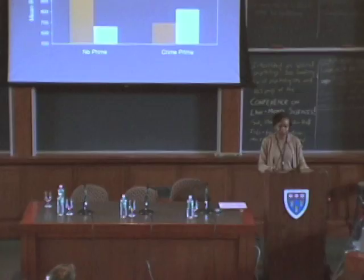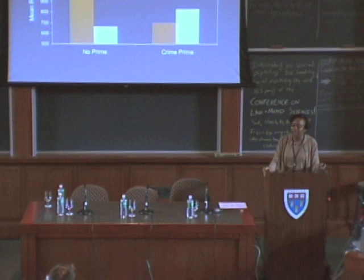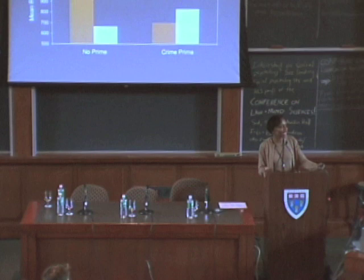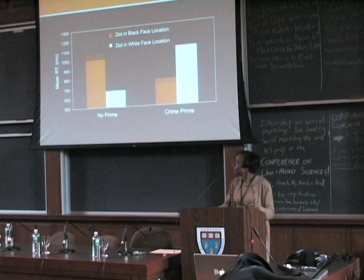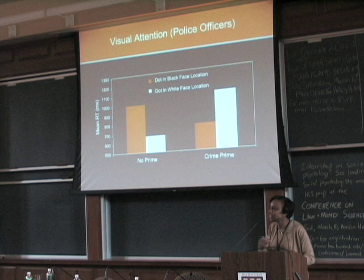We repeated this study with police officers. The question here is: when police officers are on the lookout for criminal activity, when they're thinking about violent crime, will this lead them to focus on black faces? This study is quite similar to the study I just showed you, but in this case we primed half of the police officers with words associated with violent crime — words like apprehend, arrest, capture, shoot. And you can see that the pattern of results is identical to what we see with the students: when the police officers are encouraged to think of arresting and shooting and capturing, they're drawn to the black face.